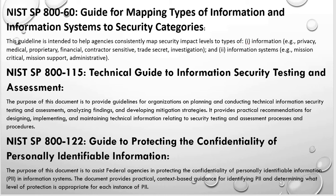NIST SP 800-122 is the Guide to Protecting the Confidentiality of Personally Identifiable Information (PII). If you work with PII data such as names, social security numbers, email addresses, phone numbers, or medical information, this is a good reference. It provides the procedural guidance on how to secure PII and prevent unauthorized access to that information.